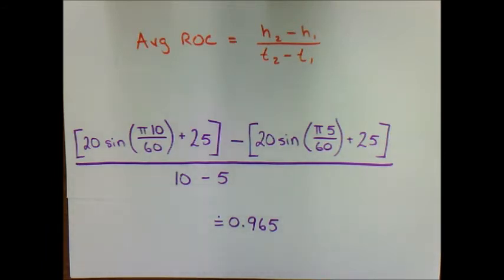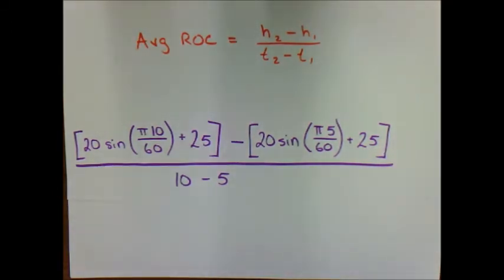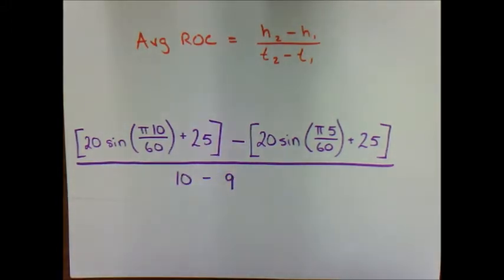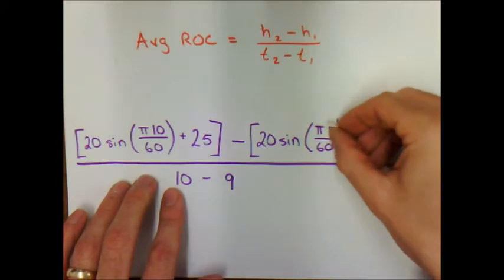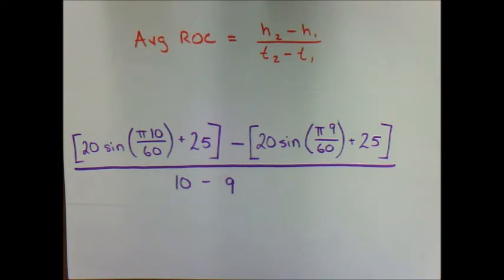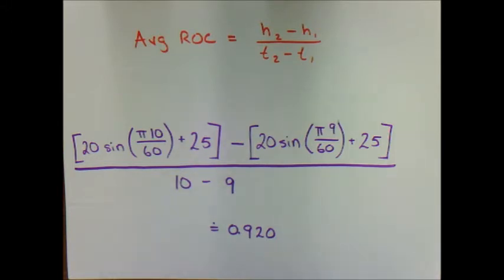For the next interval we use the exact same formula, simply changing the values. We're now using the difference between t equals 10 and t equals 9. Punching that formula into the calculator, the approximate rate of change over the interval from 9 to 10 seconds is 0.920. As you can see, we're getting closer and closer to the instantaneous rate of change at 10 seconds.